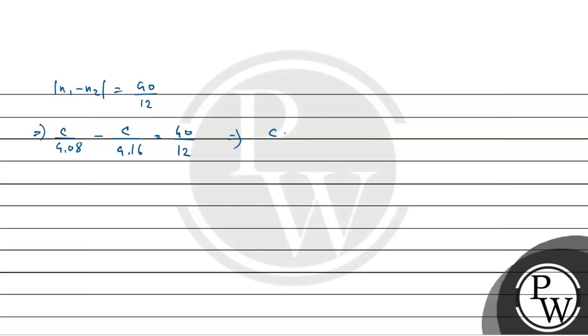Solving this equation, we get c equals 707.2 meter per second.